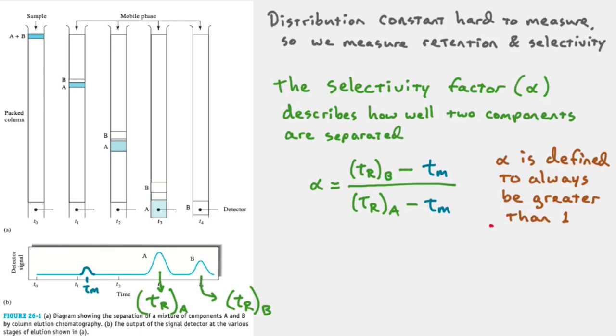Why do we care about the selectivity factor? When you're talking about a separation or a column you might want to buy and you have two components you want to separate, you really want to know what the selectivity factor is between these two components. There's a limit here. In this particular diagram your chromatogram goes back to the baseline between A and B, so you can integrate them and evaluate them separately. If you push them farther apart, all you're going to do is waste time. There's also a lower limit because you don't want these two peaks to overlap, then you can't integrate them separately and you can't resolve them very well.